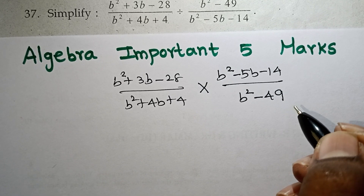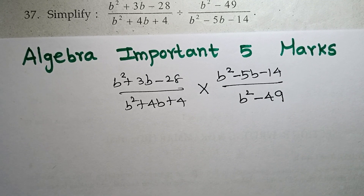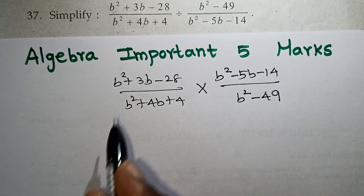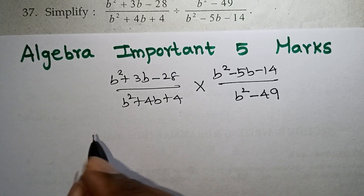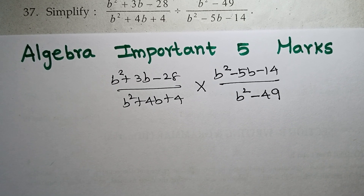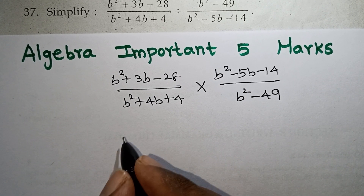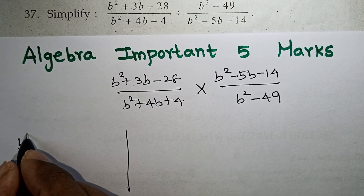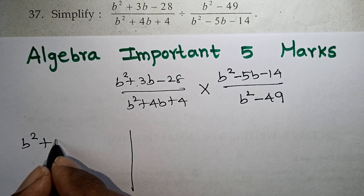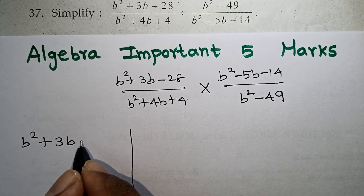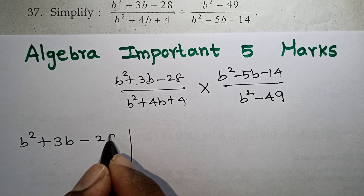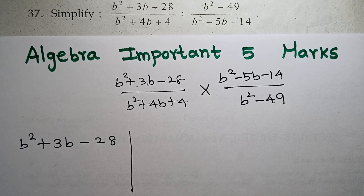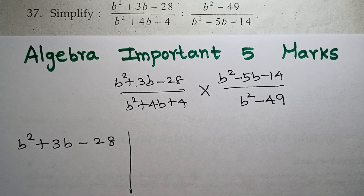Now we will factorize. We will factorize each expression. The first term is b squared plus 3b minus 28. That is very easy — you split the middle term.